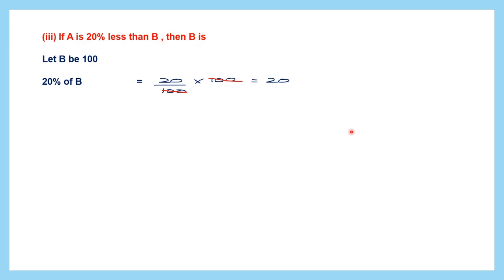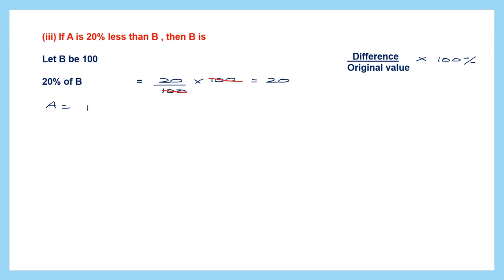We use the formula: difference between A and B divided by the original value, into 100%. Since B is greater than A there is a percentage increase. A is B minus 20% of B, which is 100 minus 20, so A equals 80. Now we know B is 100 and A is 80.